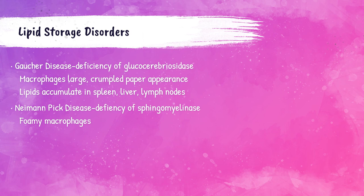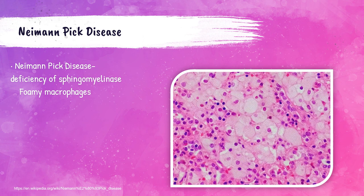Niemann-Pick disease is a metabolic disorder that results in abnormal amounts of lipids in organs like the brain, spleen, and liver. It is caused by a deficiency of sphingomyelinase, resulting in macrophages that are foamy in appearance. Here are the foamy macrophages of a patient with Niemann-Pick — this is what they look like. Both of these lipid storage disorders are discussed in greater detail in the clinical chemistry lecture series.